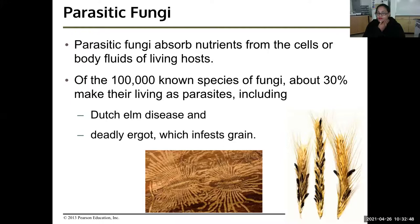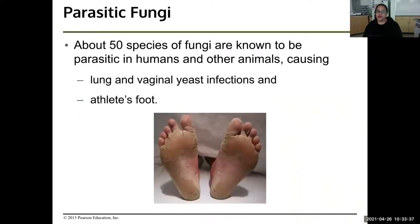There are parasitic fungi that absorb nutrients from the cells or body fluids of living hosts. Of the 100,000 known species of fungi, about 30% are parasites, including Dutch elm disease — caused by a fungus — and deadly ergot, which infests grain. Dutch elm disease creates patterns on elm trees that indicate the fungus is killing them. About 50 species of fungi are parasitic in humans and other animals, causing lung infections, vaginal yeast infections, and athlete's foot. They are easily treatable with antifungal medications.